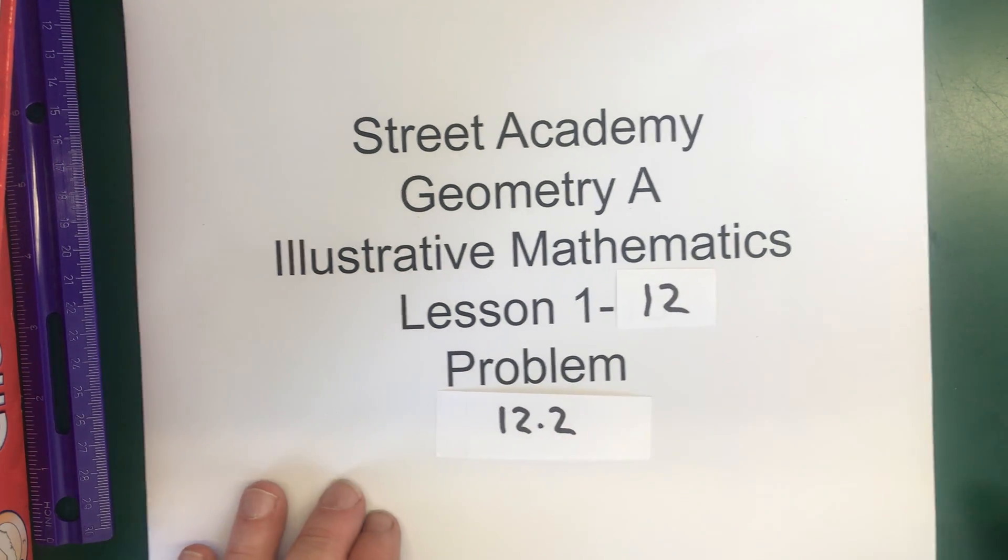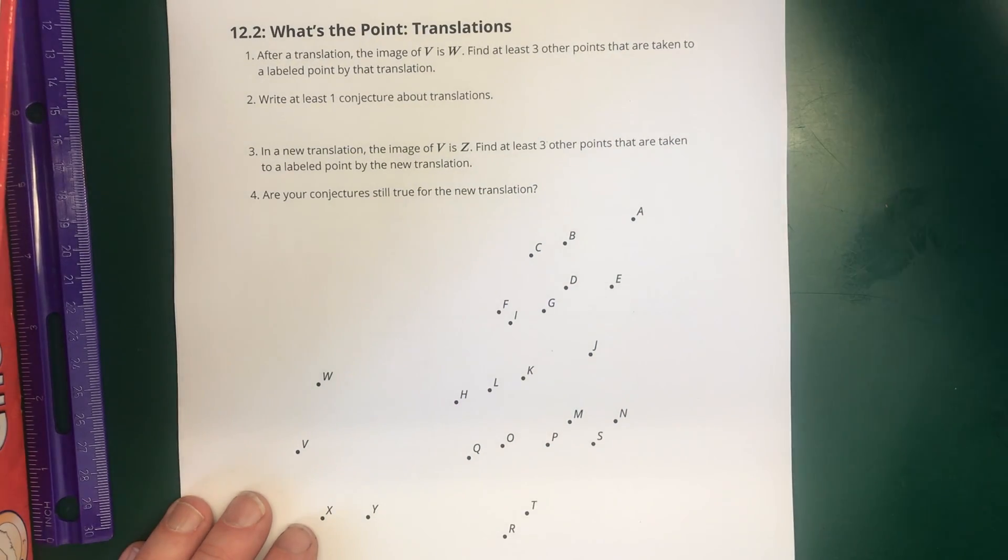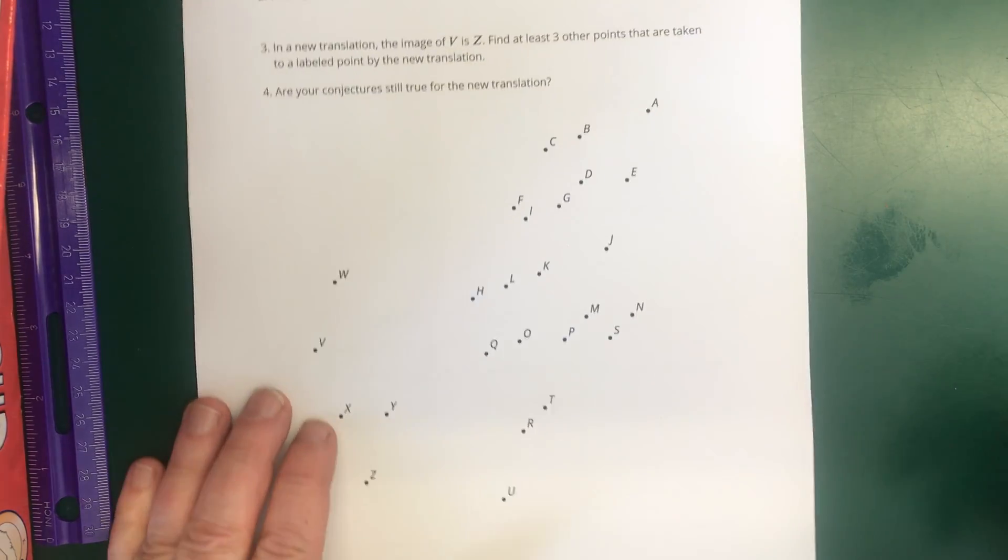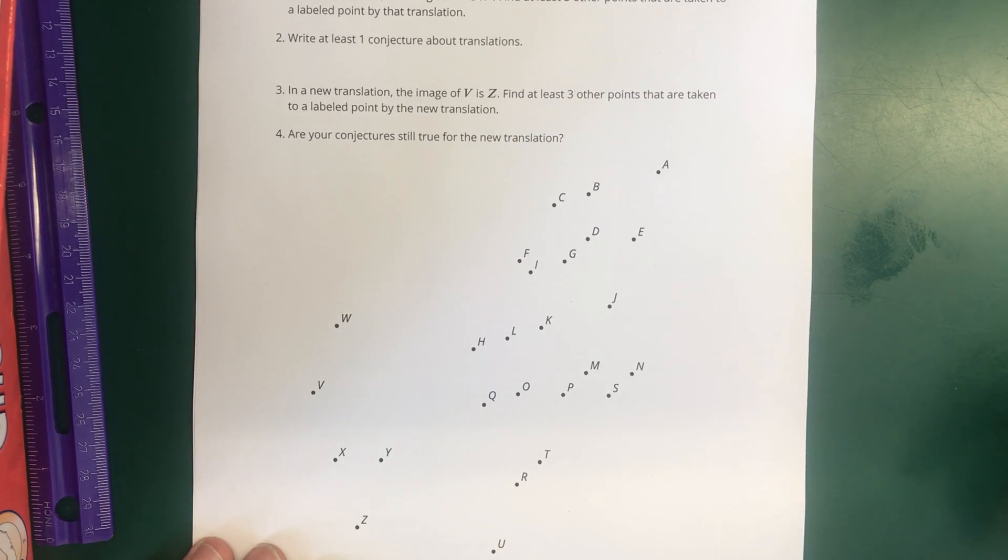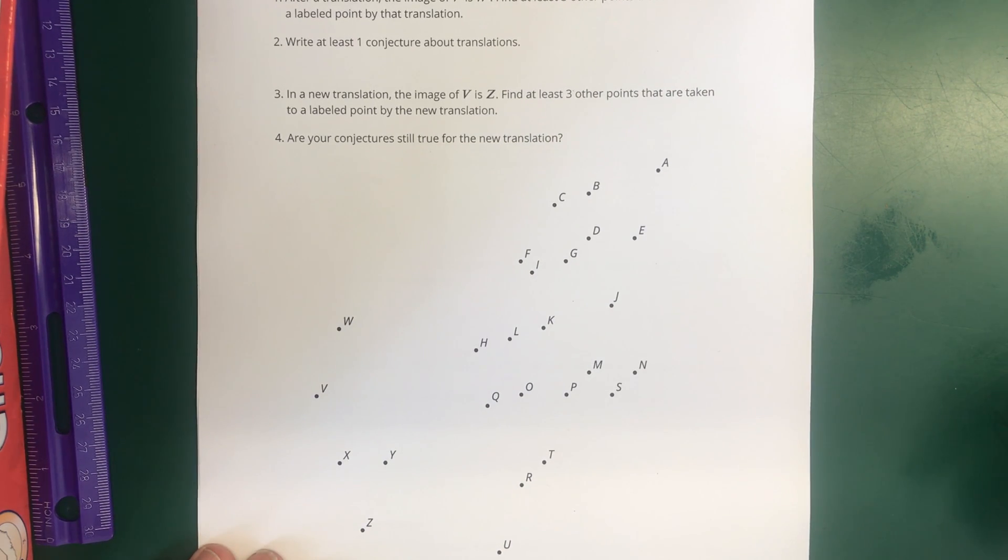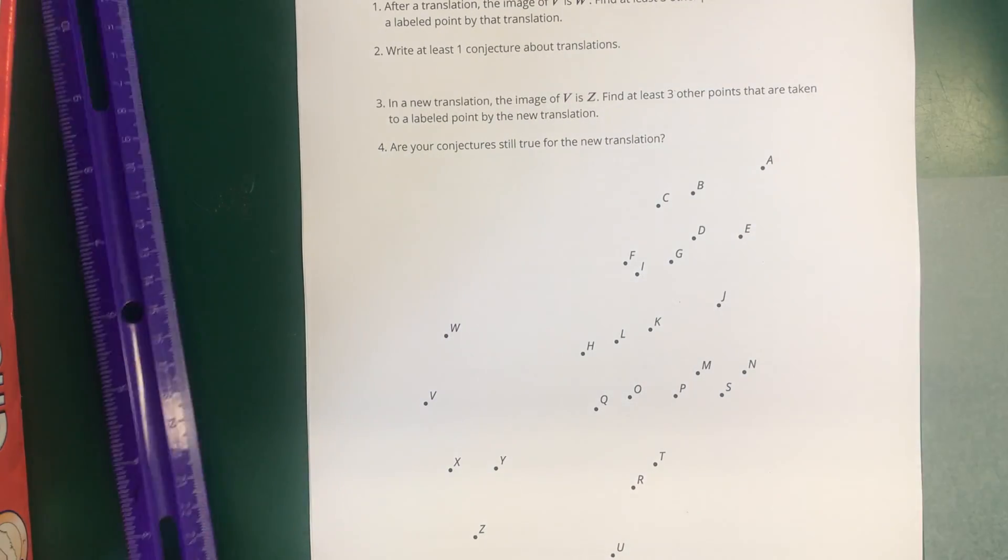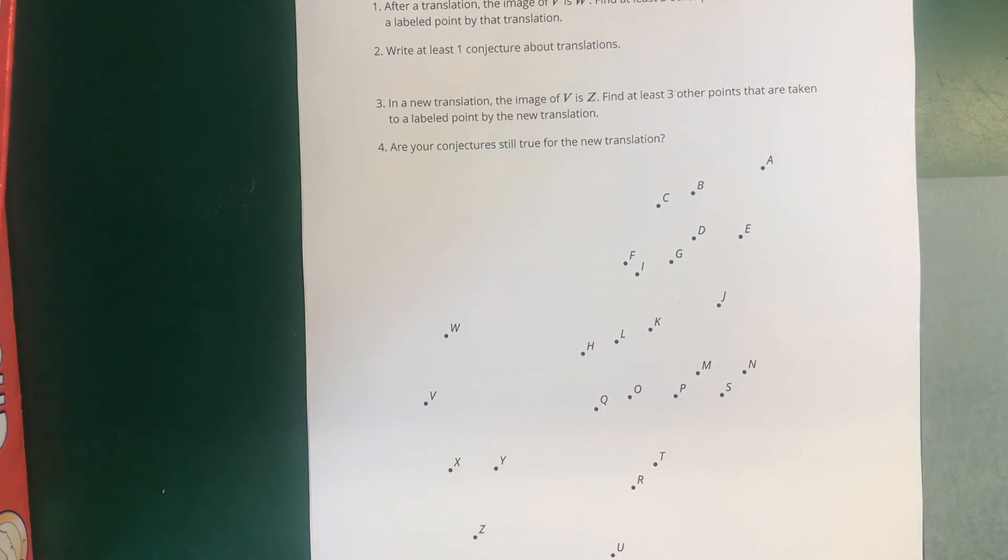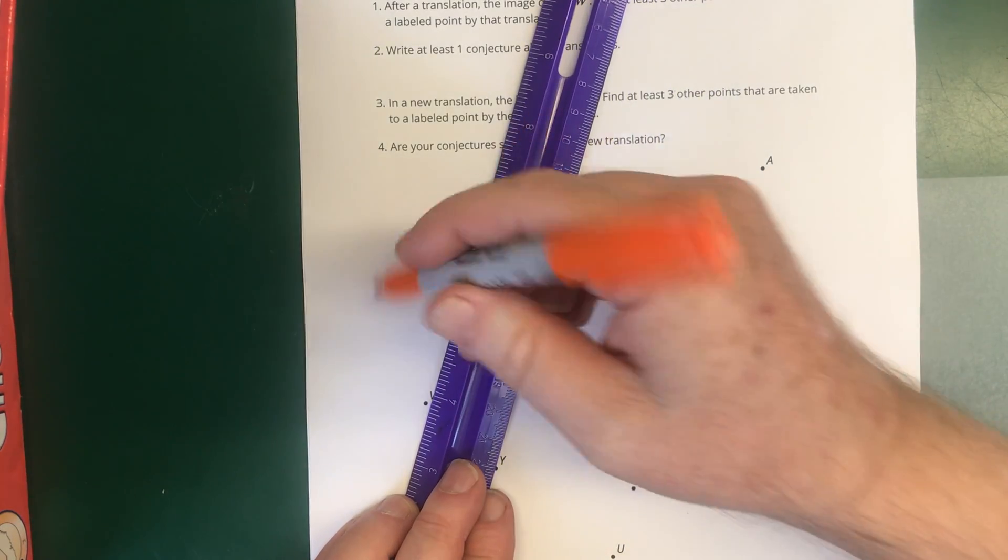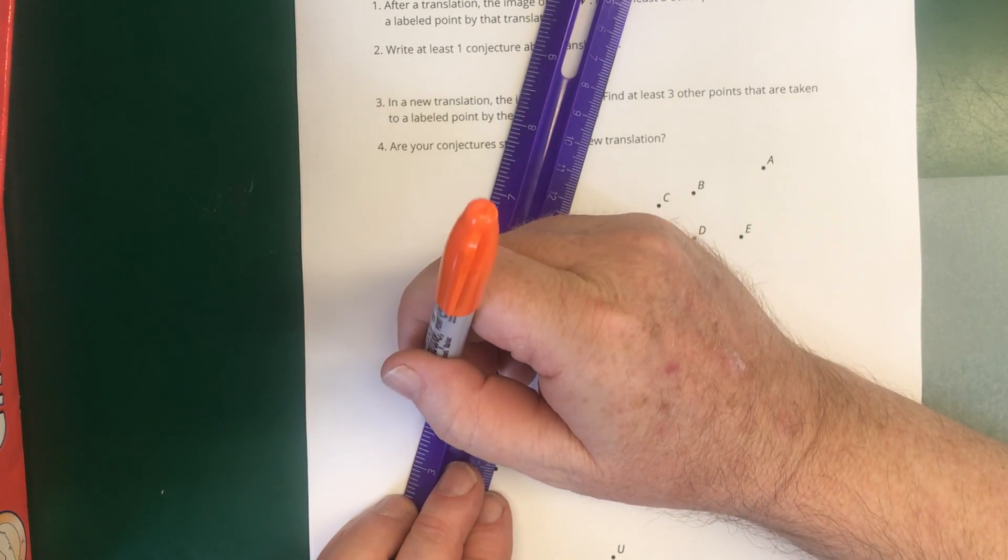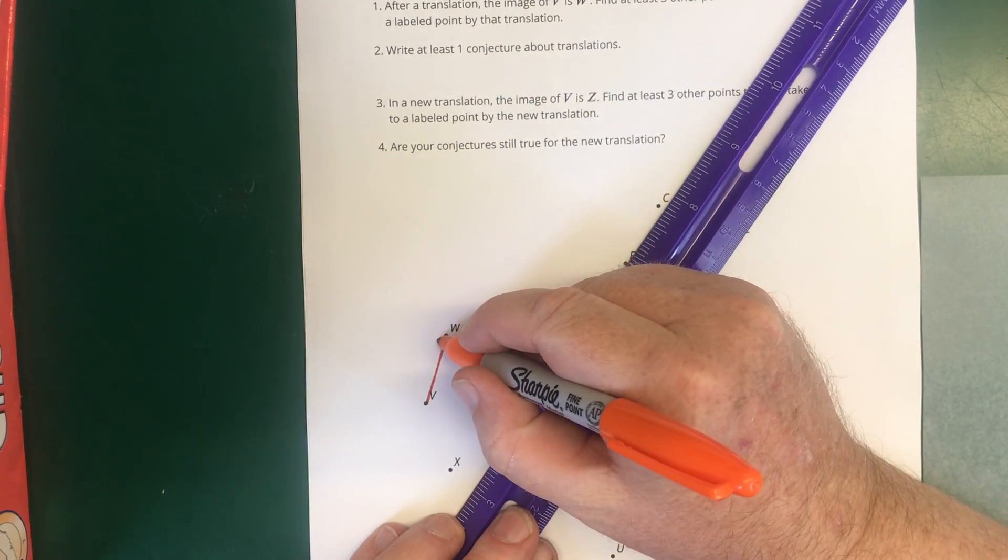So let's take a look at the problem. So we have a whole bunch of points, and the problem says that after a translation, the image of V is W. So I'm going to take a pen, and I'm going to draw an arrow from V to W. So that means when we do our translation, V moves to W, like this.